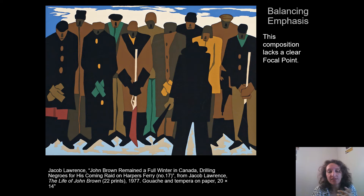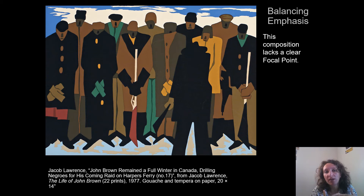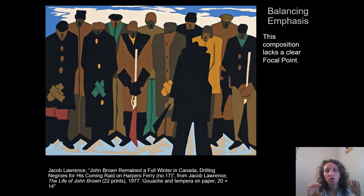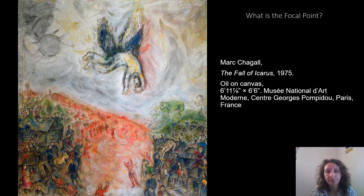Next is balanced emphasis. In contrast to the last artwork where your eye was completely drawn to one area and you almost couldn't look away, this artwork lacks a clear focal point. Your eye seems to bounce around between all of these individual figures, and Jacob Lawrence did this very intentionally. By not having a clear focal point — by having this balanced emphasis — he's making the point that none of these individual soldiers is more or less important than the one next to it. They all have equal time with your eye, which means they have equal importance in the artwork.